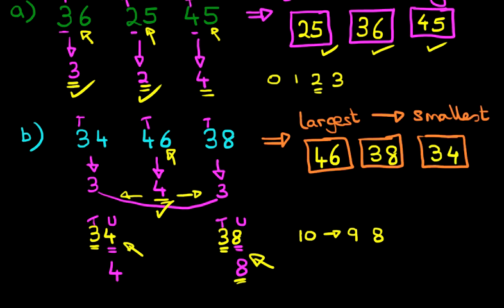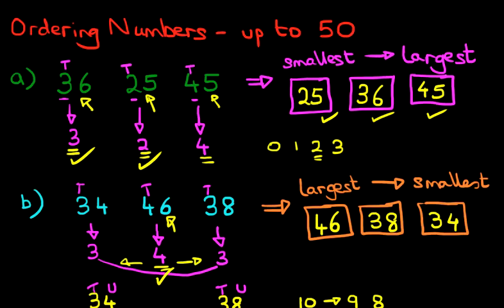We have rearranged these three numbers from the largest to the smallest. In both examples, the key thing is first to look at the digit on the left — in this case, the tens. In the first example, we worked out all three boxes just by looking at the tens. That's not always possible: in the second question, looking at the tens got us the first box, but for the next two we had to look at the units. So the strategy is: look at the tens first, and if you cannot order the numbers from the tens alone, then look at the units.